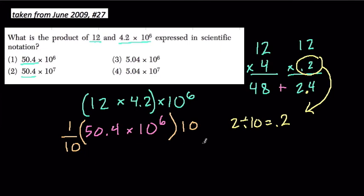And because we're multiplying everything, we can regroup. So I'm going to say, let's multiply these two first, 1 tenth and 50.4, and then let's multiply these two together. So 10 to the 6th times 10 is 10 to the 7th.